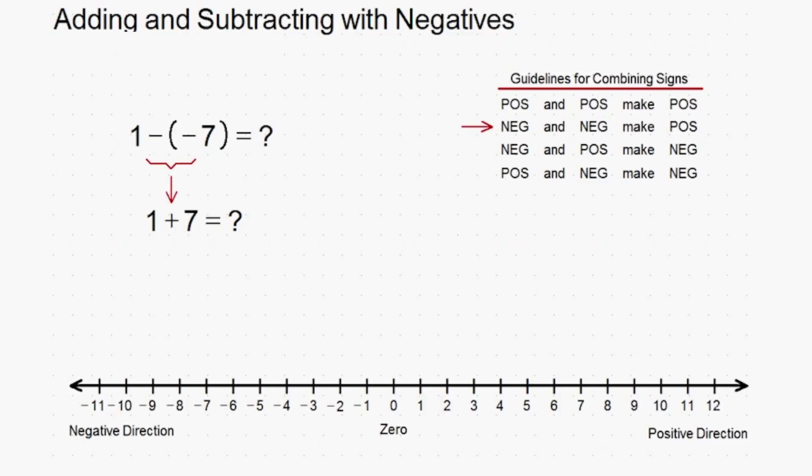The next thing to do is think of the number line again. We're starting at positive 1, walking to the right for 7 steps. As you can see, we ended up at 8, so that's the solution.